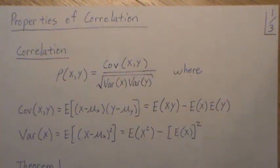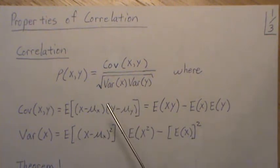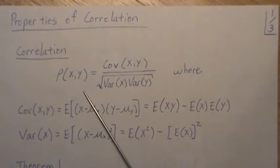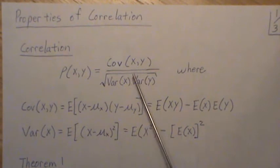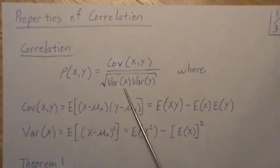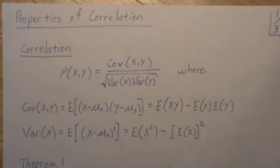In this video we're going to look at some properties of correlation that I think everybody knows but not everybody has seen the proof of. The properties we're going to prove is that the correlation is between negative 1 and 1 — this is how you define correlation, it's the covariance divided by the product of the standard deviations — and we're also going to show that if the correlation is 1 or negative 1 then there's a perfect linear relationship between x and y.